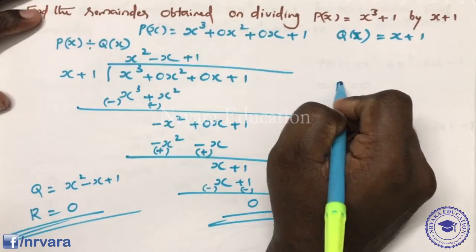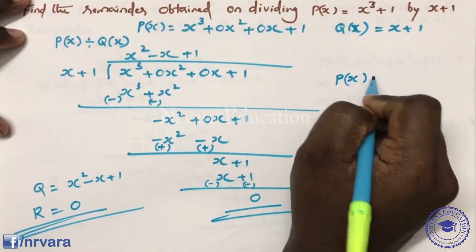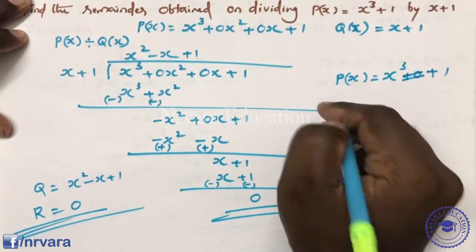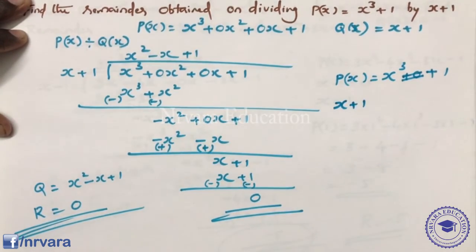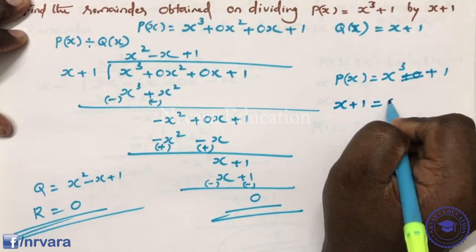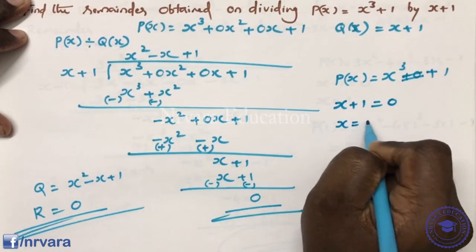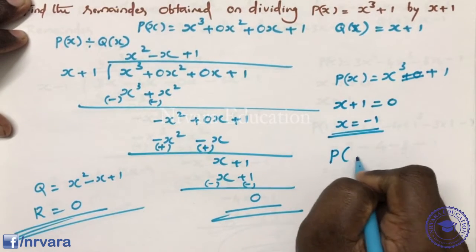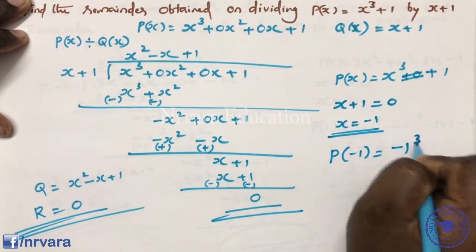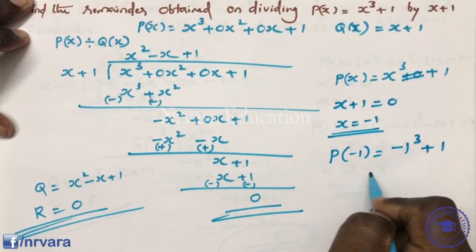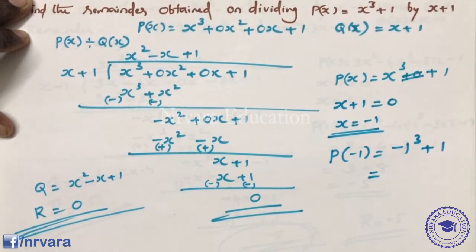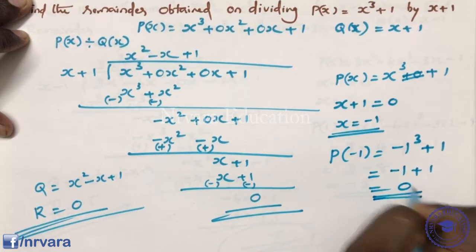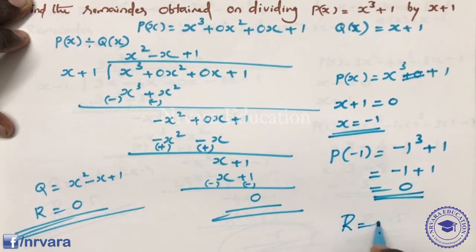Okay, P of x equals x cube plus 1. We substitute x equals minus 1. P of minus 1 is minus 1 cube plus 1. Minus 1 into minus 1 into minus 1 is minus 1. So minus 1 plus 1 equals 0. The remainder is 0.